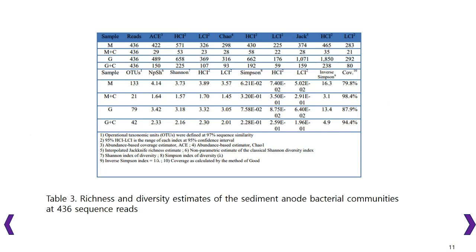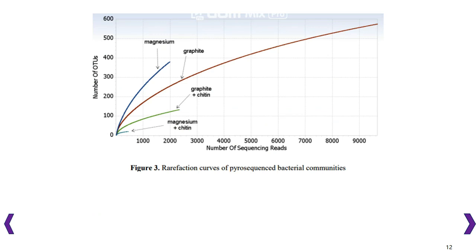Table 3 shows that anode bacterial communities of the chitin-absent anode had larger richness estimates and diversity estimates than those of the chitin-supplemented anodes. All tested richness estimates were highest in the anode bacterial community of magnesium, followed by graphite, graphite with chitin, and magnesium with chitin. The CD-HIT-based rarefaction curve in figure 3 confirms that the anode bacterial community of Magnesium had the richest species diversity, followed by graphite, graphite with chitin, and magnesium with chitin.